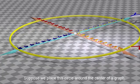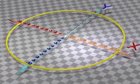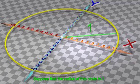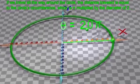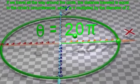Suppose we have a circle. Suppose we place the circle around the center of a graph and the radius of it is one. Let's give a name, theta, to the angle of this line right here. Alright, boomers.